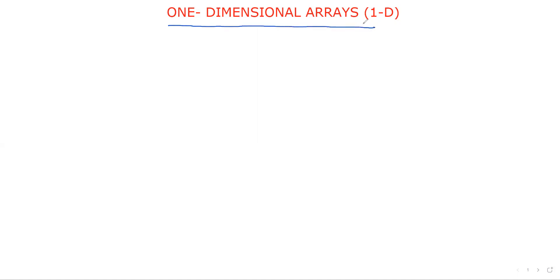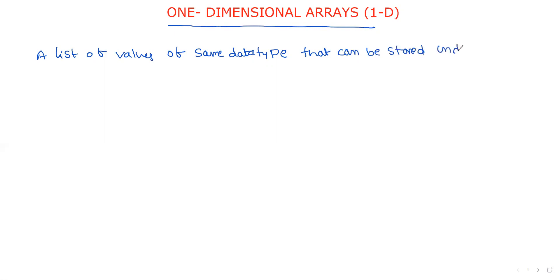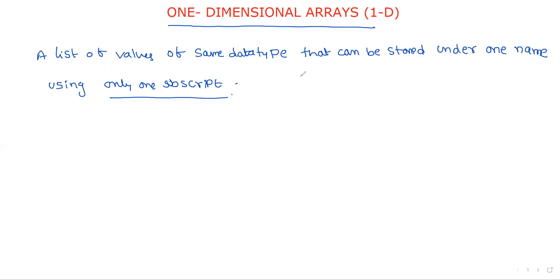Welcome to our channel. In the last session we discussed what is an array and the different types of arrays. The first type is a one-dimensional array. Simply defined, an array is a list of values — a collection of values of the same data type — all stored under one variable name. All elements are stored in contiguous, sequential memory locations.